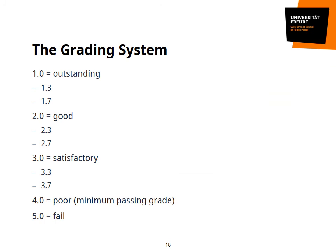The grades of your examinations will be given in this format, ranging from 1.0 as outstanding to 4.0 as mere pass. Grades are given in steps of 0.0, 0.3, 0.7, but through combined grades you might actually end up with module grades like 1.79 or 2.07. A fail — for example not handing in a term paper on time — is marked as 5.0.